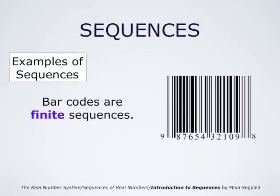Barcodes are examples of finite sequences which are being used to label products. This can be automatically read by machines, which makes life very convenient at stores.